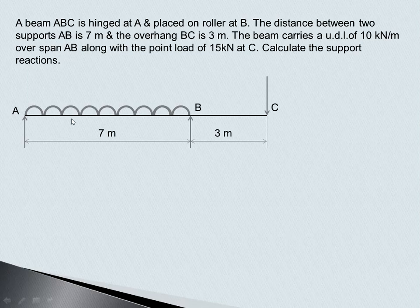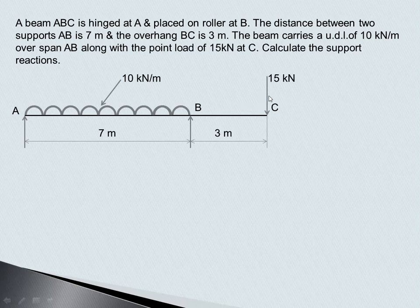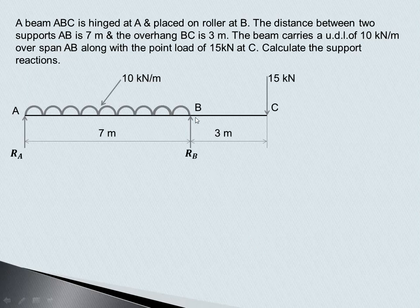This ABC is the overhanging beam in which the span length AB is 7 meters. It carries a UDL of 10 kilo Newton per meter over the span AB, and at the end of the beam at point C there is a point load of 15 kilo Newton acting.